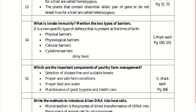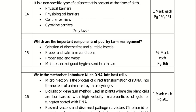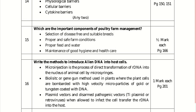Write the methods to introduce alien DNA into host cells. Micro-injection is the direct introduction of DNA into the nucleus of animal cells by micro-syringes. The biolistic or gene gun method is used in plants, where plant cells are bombarded with high-velocity microparticles of gold or tungsten coated with DNA. Plasmid vectors and disarmed pathogenic vectors such as Ti plasmid and retroviruses, when allowed to infect cells, transfer recombinant DNA into the host. Any two of these methods fetch two marks.